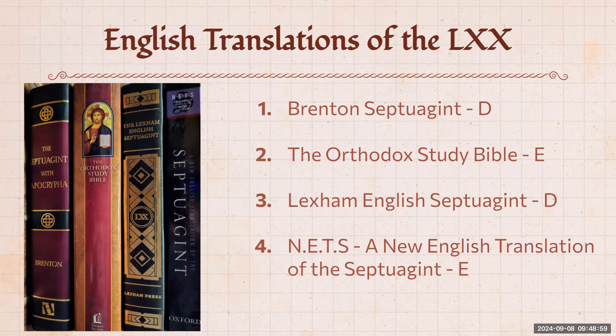Just a quick wrap-up: the four versions are Brenton's (diplomatic), Orthodox Study Bible (eclectic), Lexham English Septuagint (diplomatic), and NETS (eclectic). I'm going to put them on the back table so you can take a look at them. They're all helpful. If you can get all four, I recommend it — multiple translations are always helpful for dealing with translation difficulties and textual variants. That's as far as I'm going to go today. I've run out of time. You all are dismissed. Thank you.